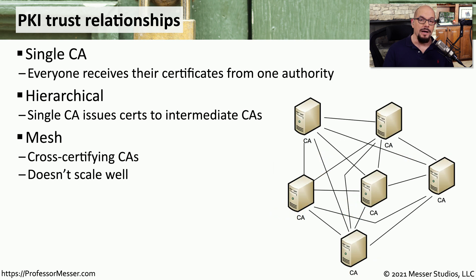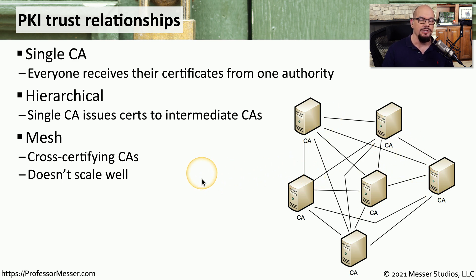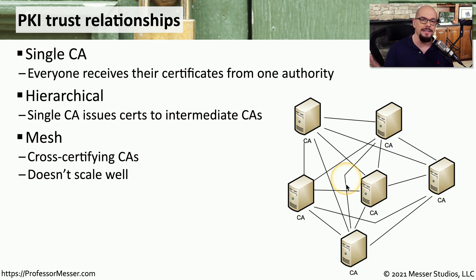Another model is to create multiple CAs as a mesh, where every CA trusts every other CA. This is probably not a concern if you only have two or three, but once you get up to a larger number of certificate authorities, it becomes very difficult to maintain scalability across all of them.